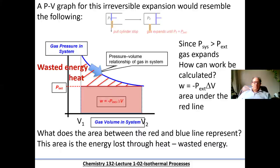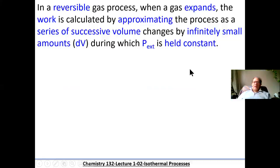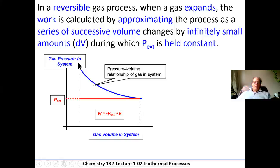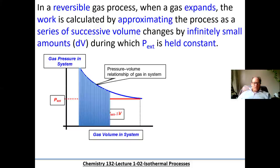For a reversible gas process, when the gas expands, the work can be calculated by approximating a process of very, very small — infinitely small — changes in volume, which we call dV. The external pressure will be held constant and equal to the pressure of the gas. We perform incremental changes in volume, keeping those same incremental steps — a very, very small increase in volume — until we reach the end.